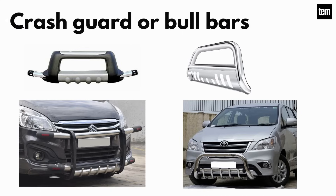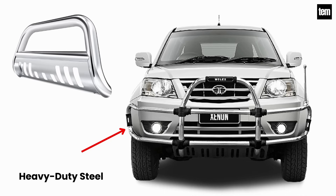Crash guards or bull bars. The crash guards are attached to the front frame or chassis of the car. These are mostly seen in SUVs and MPVs to protect them from damage in case of an accident. They are typically made of heavy-duty steel and can effectively shield the front end of the vehicle.